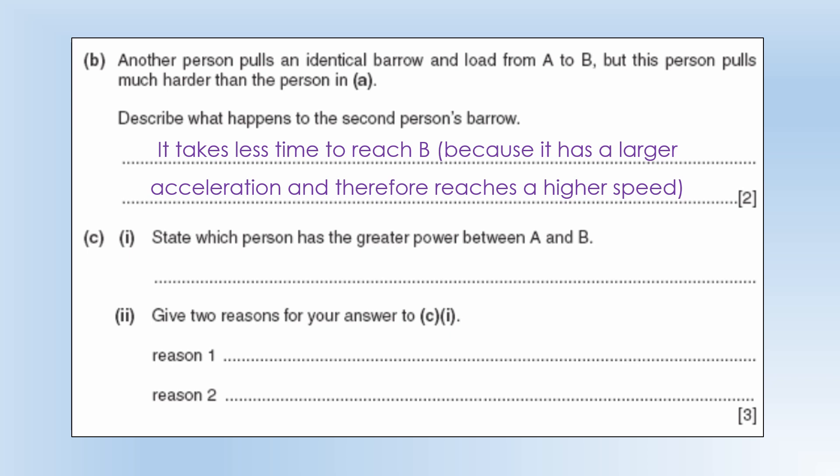State which person has the greater power between A and B. It's going to be the second person and there are two reasons for this. One, they do more work - if they travel the same distance at double the force they're going to do double the work. They're also going to do the work in a shorter period of time. They're going to get the barrow to a higher speed, it'll take a shorter time to cross the distance, so higher power.